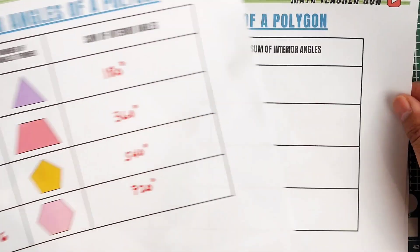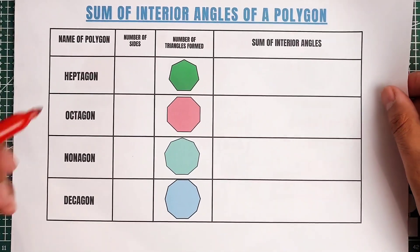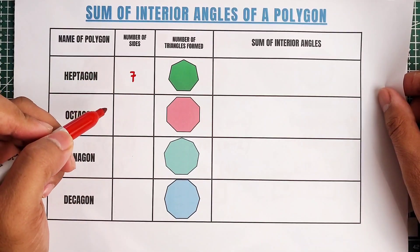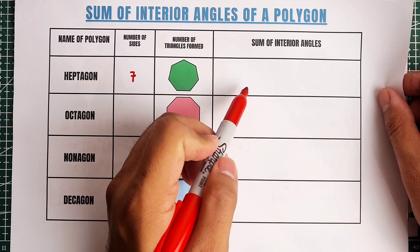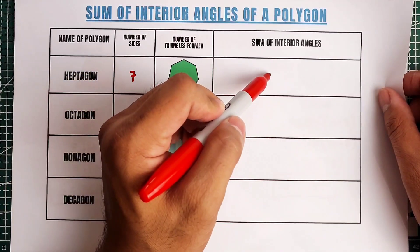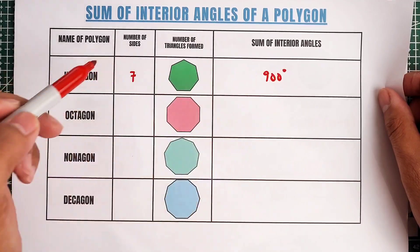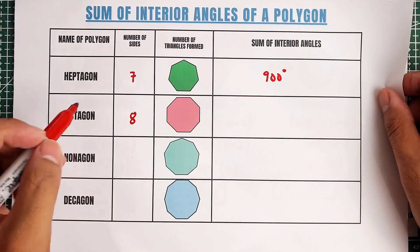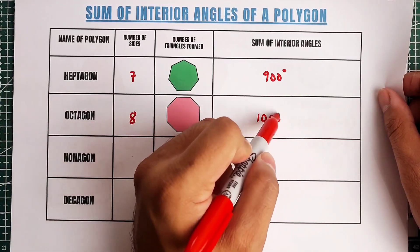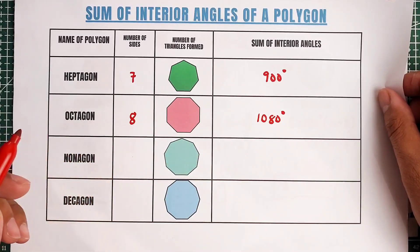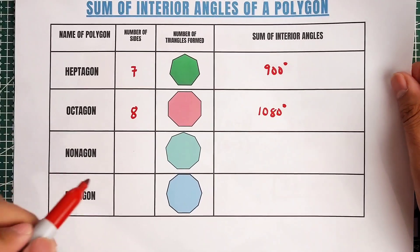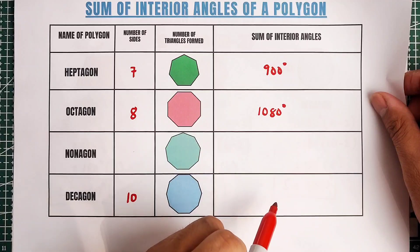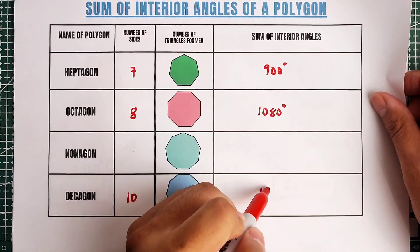Let's continue with the other table. We have heptagon — when you say heptagon, this is a seven-sided polygon. If you use the formula, this will give you the answer of 900 degrees. Next, octagon has eight sides, and the sum of the interior angles is 1080 degrees. And we have the decagon, which is a 10-sided polygon, and its sum of interior angles is 1440 degrees.